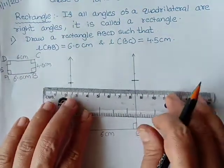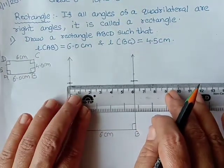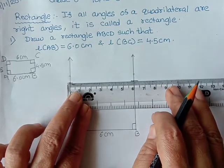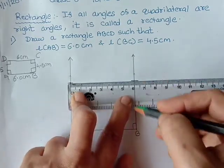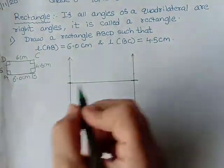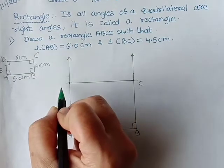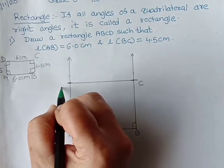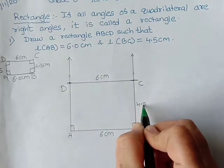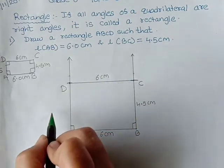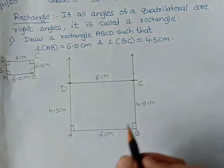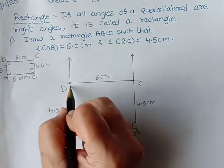Now automatically if you join these two, this is going to be 6 centimeter. You can see, then only see how perfect it is. So this was your point C, this was your point D. This is 6, this is also 6 centimeter. This is 4.5 centimeter and this is also 4.5 centimeter. These two angles also, they will be of 90 degree.